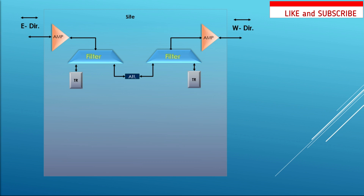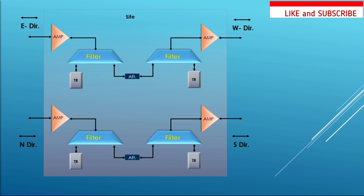Now if we add two more directions — north and south — the same approach applies. Signals coming from north can be dropped on a transponder or passed through. To send a signal from east to south, we connect both filters of east and south with each other using the specific frequency or wavelength port. For example, using the 194 THz port, we connect fiber between these two ports and the signal passes through from east to south.